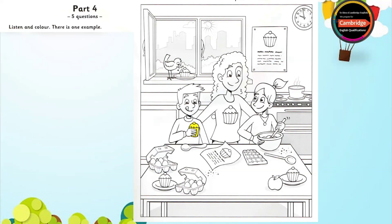Look at this mother and her two children. Can I colour their cakes? Yes. Let's start with that one. The one in the boy's hand? Yes, the one in the boy's hand. Colour it yellow, please. Right. Can you see the yellow cake in the boy's hand? This is an example.